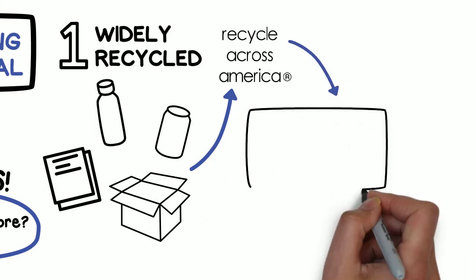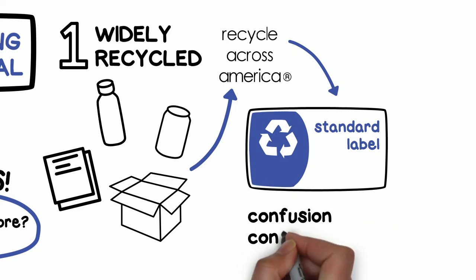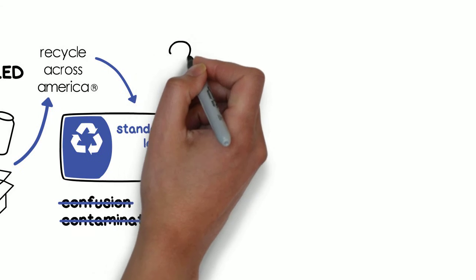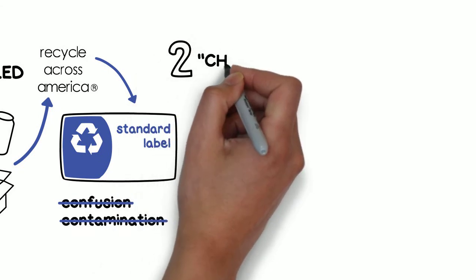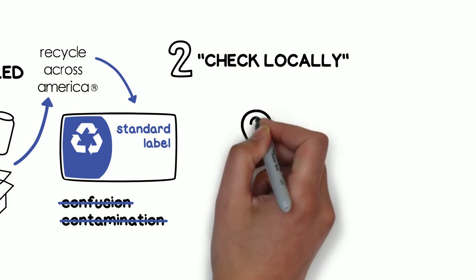Then comes the check locally category, meaning that only certain communities accept these items through recycling bins or carts, so you have to check with the local recycling program. Examples are cartons and aluminum foil.